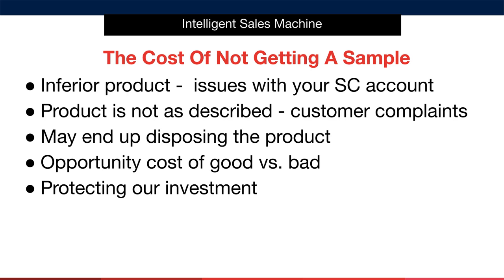Second, you may receive a product that is not as described. This leads to customer complaints, which in turn leads to problems with your Amazon seller account. Not sampling an item may result in you disposing of the product completely — again, this is linked to a product that's inferior or isn't as described. This is a very costly thing to have to do. The cost isn't just the cost of throwing out the item, but it's also the opportunity cost that will result from all the missed sales you'll experience. Finally, think of sampling as protecting your investment. It's worth investing a little upfront to protect yourself in the long run.